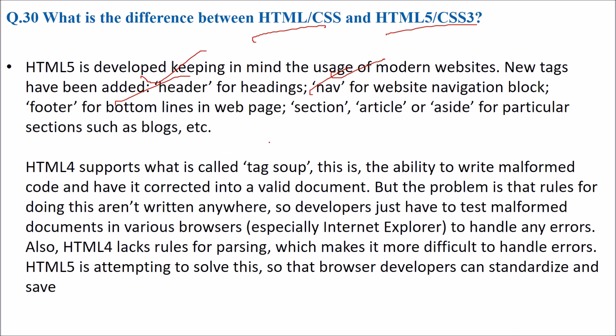HTML4 supports tag soup, the ability to write malformed code and have it corrected into a valid document. But the rules for doing this aren't written anywhere, so developers just have to test malformed documents in various browsers, especially Internet Explorer. HTML4 lacks rules for parsing which makes it difficult to handle errors. HTML5 is attempting to solve this.